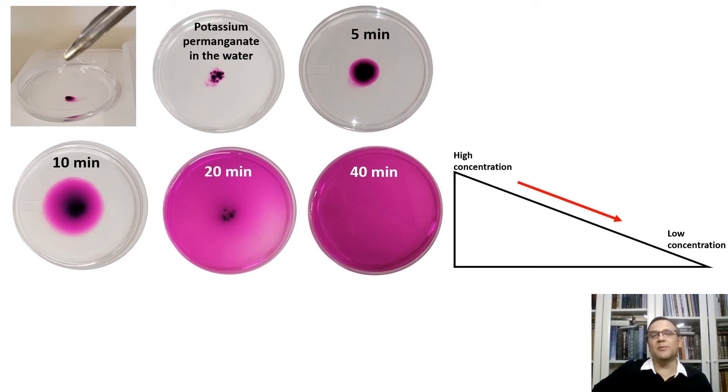The simple experiment of diffusion of potassium permanganate ions in water using a petri dish effectively demonstrates the fundamental principles of diffusion. As the potassium permanganate crystals dissolve, the permanganate ions diffuse from an area of high concentration near the crystal to areas of low concentration throughout the petri dish. This movement is driven by the random thermal motion of ions which possess kinetic energy. Over time, the purple color of the potassium permanganate spreads evenly throughout the water from regions of high concentration to regions of low concentration until equilibrium is achieved. This experiment provides a clear visual representation of diffusion and highlights the role of kinetic energy in the movement of ions in a solution.